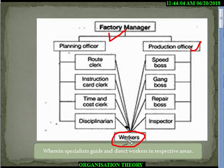Taylor thrust upon maximum efficiency. He wanted this worker to be guided and supervised by these eight bosses: route clerk, instruction card clerk, time and cost clerk, disciplinarian, speed boss, gang boss, repair boss, and inspector.